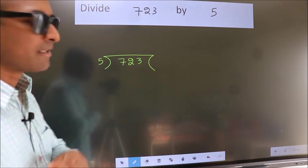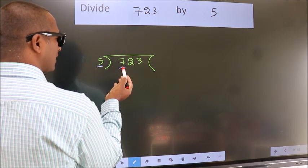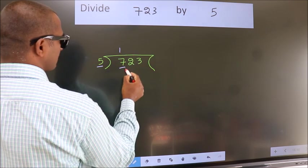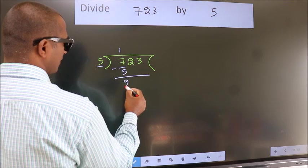Next, here we have 7, here 5. A number close to 7 in the 5 table is 5 once 5. Now we should subtract. We get 2.